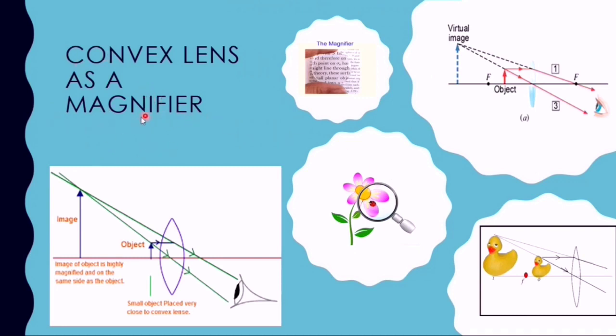The convex lens as a magnifier: when we use a convex lens as a magnifier, we need to place a small object very close to the lens, between the optical center and the principal focus. We will consider two rays coming from the object.